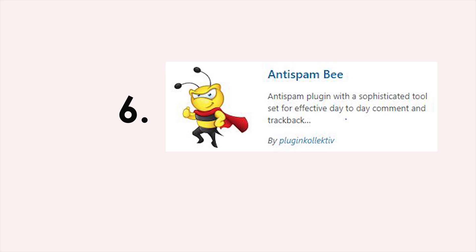Number six is a plugin called Anti-Spam Bee. This is a day-to-day comment and trackback spam-fighting plugin. It's very easy to download — the default settings will work just fine and there's nothing extra you need to do.